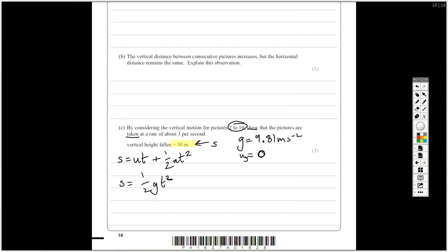Rearrange for time. So 2S over G, and rooted is time. Input all the numbers, 2 times 30, divided by 9.81, and root. Do that in the calculator, and you should find that that is 2.47 seconds. So that is for 8 seconds. So 8 divided by 2.47, gives me pictures per second, which comes out at around 3 seconds, or 3, sorry, 3.2 pictures.